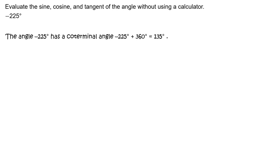The angle negative 225 degrees has a coterminal angle negative 225 degrees plus 360 degrees, or 135 degrees.